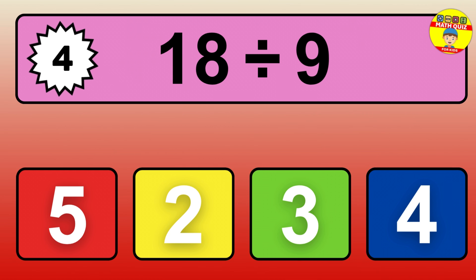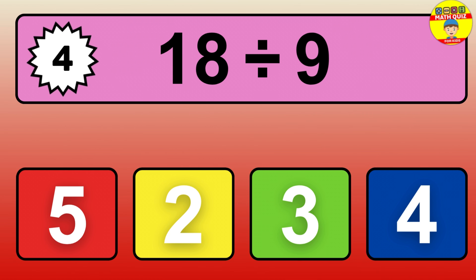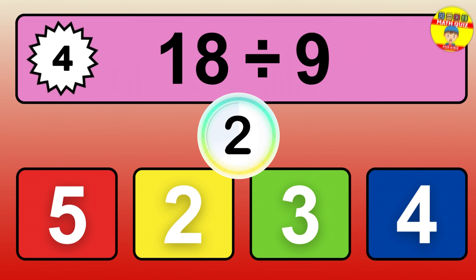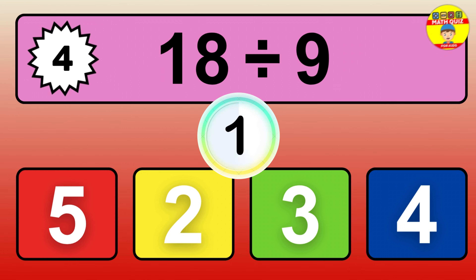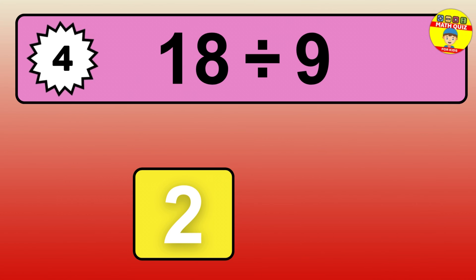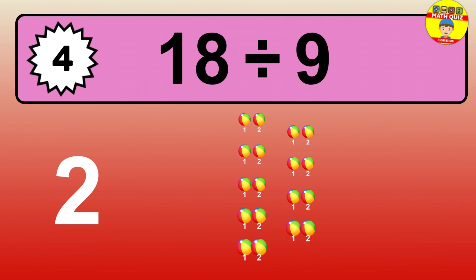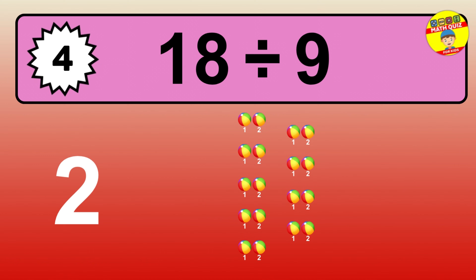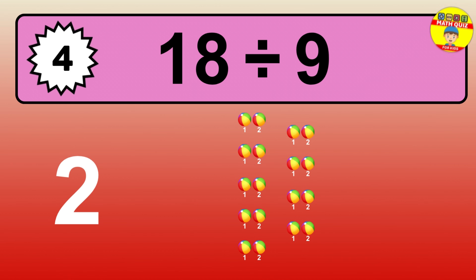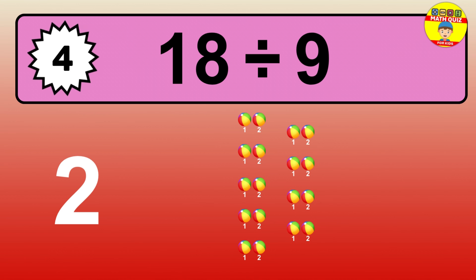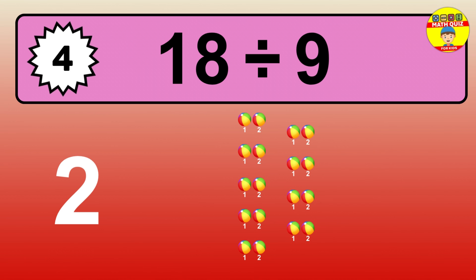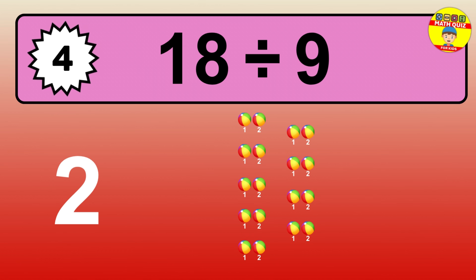18 divided by 9 is… time to think. Let's go to the solution. Divide the number 18 by 9. Each group contains 9 units, so dividing 18 by 9 results in 2 equal groups. Thus, the result is… 18 divided by 9 equals 2.